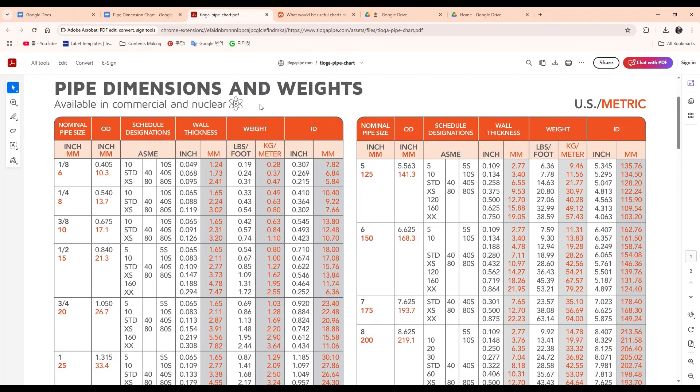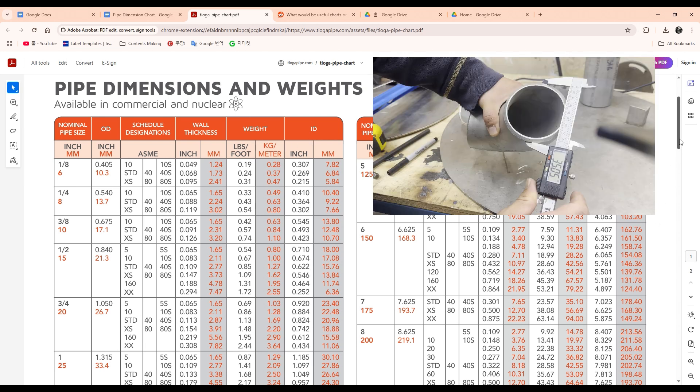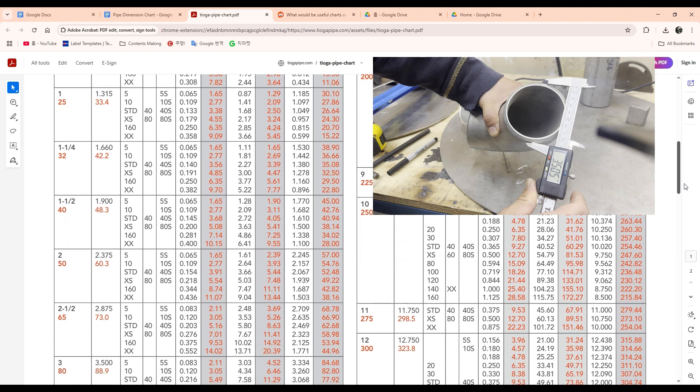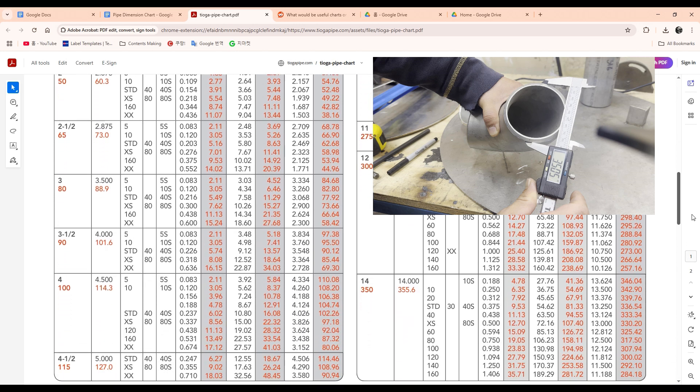Next is Pipe Dimension Chart. If you are a pipe welder or a pipe fitter, this is a must-have. This chart shows pipe size, pipe OD and ID, and thickness. Do you remember that I used the caliper to measure the outside diameter of 3 inch pipe? If you have a pipe dimension chart, you don't have to measure it. Just look at the chart and it says its outside diameter is 3 and a half.